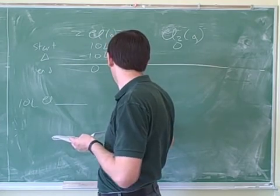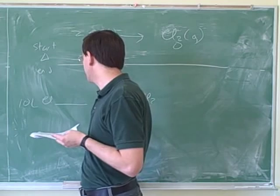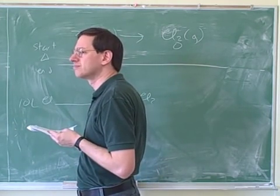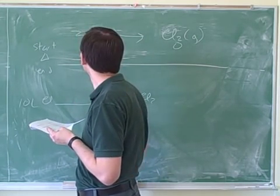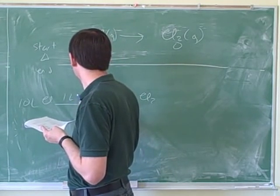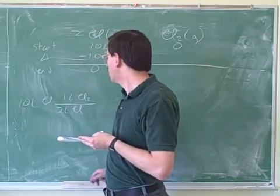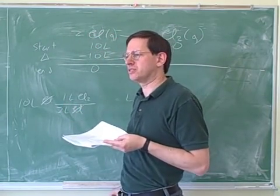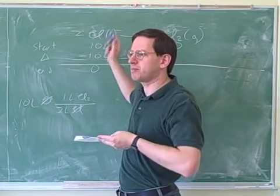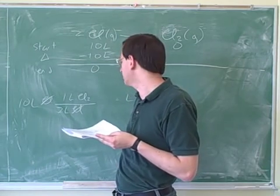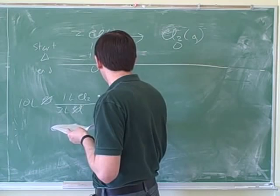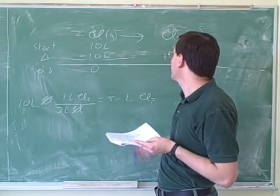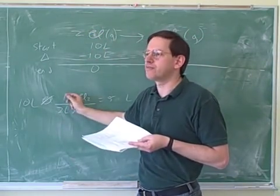Let's do that as a formal unit conversion. If I want to go from 10 liters of atomic chlorine to liters of diatomic chlorine, what units do I need on the top and the bottom? 10 liters of C-L. There's 1 liter C-L₂ for every 2 liters of C-L. That's right. So to start with the units, you put chlorine down here because you want to cancel the chlorine up here. And then we get these numbers from the stoichiometric coefficients. This tells us to do 10 divided by 2, which gives us 5 liters.